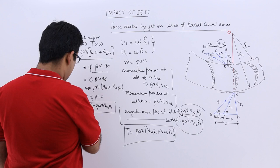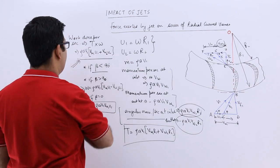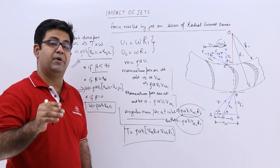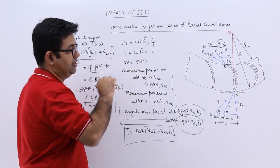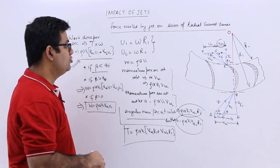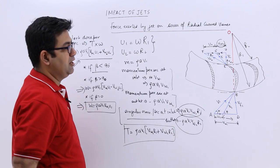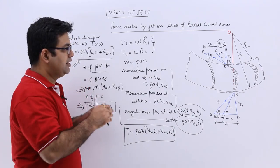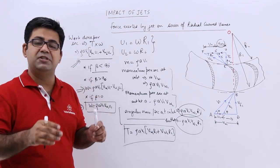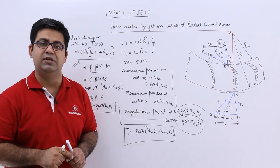These three are the cases that you should remember to calculate the work done per second by the jet on this series of curved vanes. I hope you got this entire explanation. Now, after this, let's derive a value or an expression to find out the efficiency of this jet.